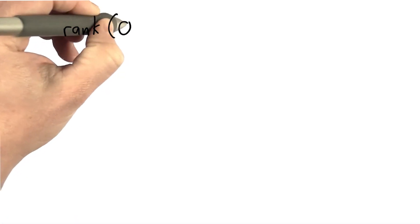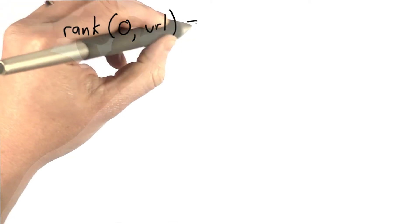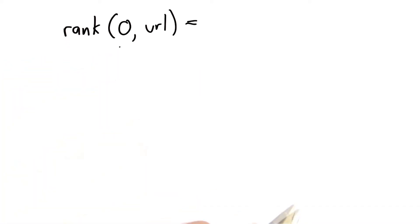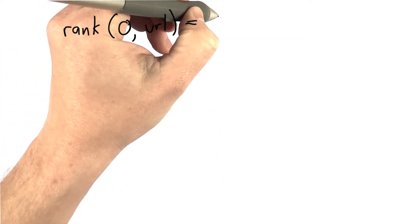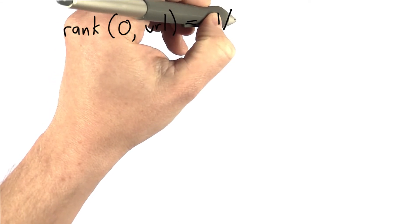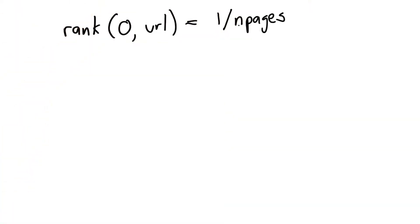So let's remember how we defined our ranking function. We're going to have a time step and keep going through steps to get more accurate rankings, but initially we're going to give every rank 1 divided by the number of pages. Before I called that capital N, I'm going to use nPages as a more Pythonic variable name for that.